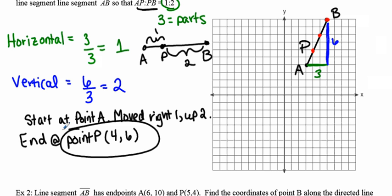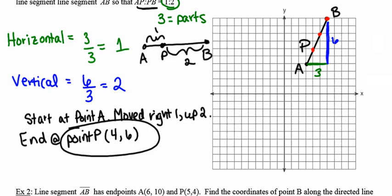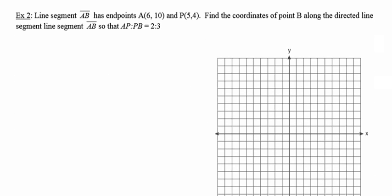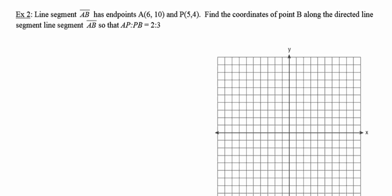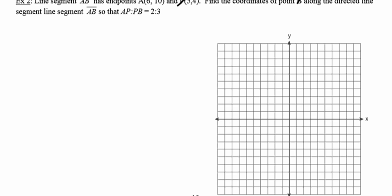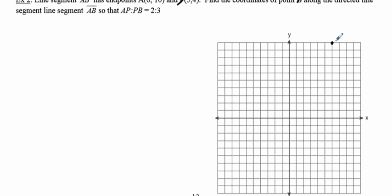That was a nice example with no fractions or decimals — pretty straightforward. Now let's look at one that's a bit more challenging and does involve fractions and decimals, though it's still the same idea. Line segment AB with the given endpoints — note there are a couple of typos in this problem. It should say point B, and we need to find the coordinates of point P along that directed line segment such that the ratio AP to PB is 2 to 3. I'll plot the points: there's point A, there's point B, and I'll draw the line.